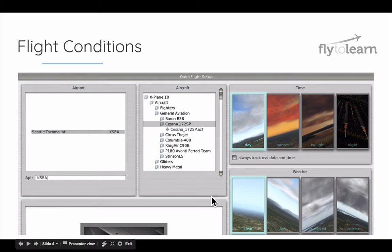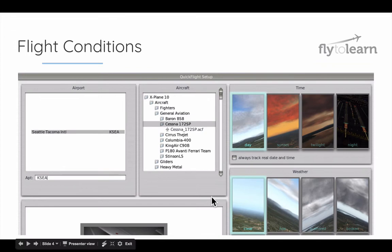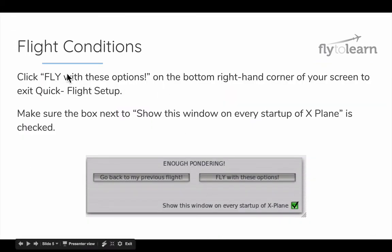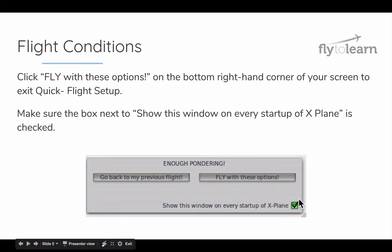Once we start flying, if you have a hard time seeing the white navigation box that allows you to control the plane, you can select a few clouds from Quick Flight Setup. This will make it a little bit easier to see the outline of the navigation box. When you're finished, click Fly with these options in the bottom right corner of your screen. But before you do, make sure you click this checkbox to show this window on every startup of X-Plane.